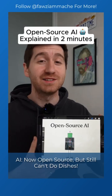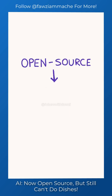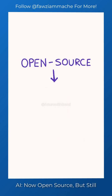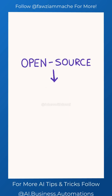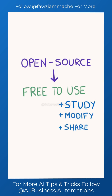Open source AI explained in two minutes. When someone says an AI model is open source, it means more than just free to use. It also means anyone has the freedom to study how the system works, modify its components, and share it with others for any purpose.